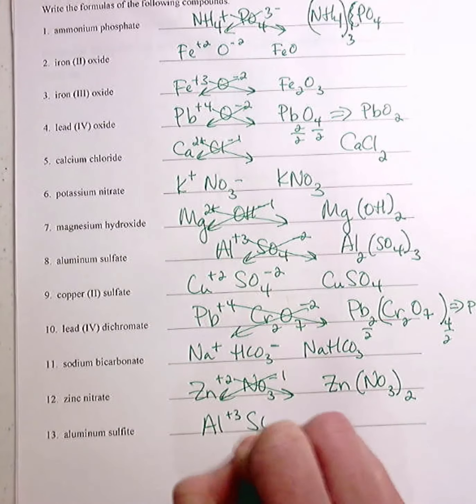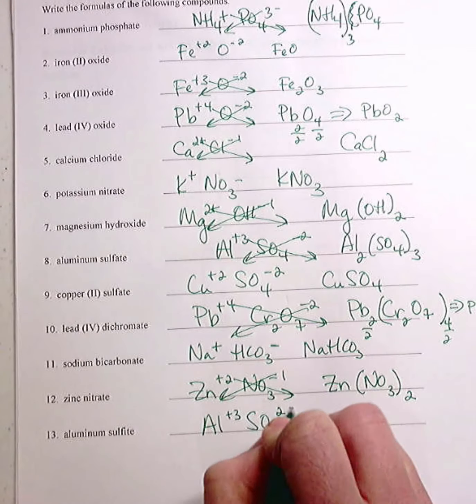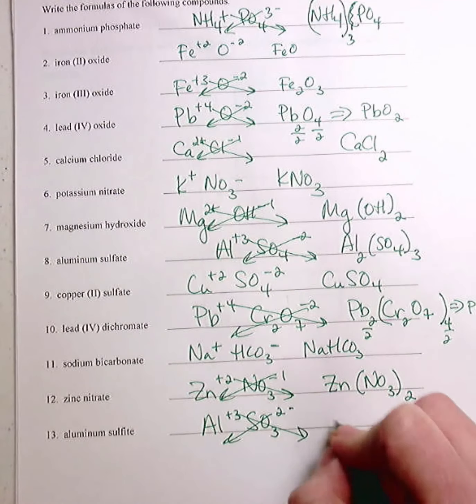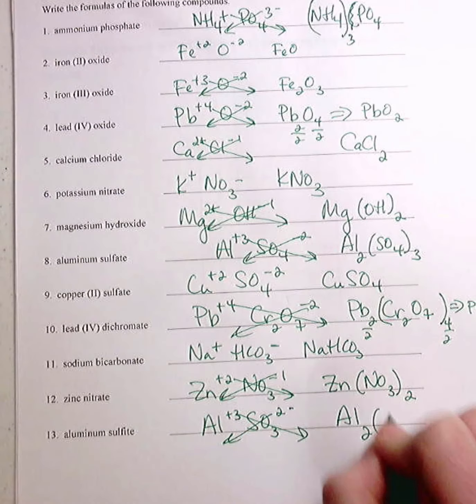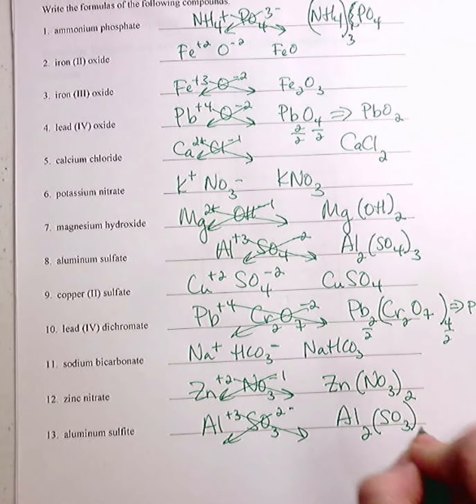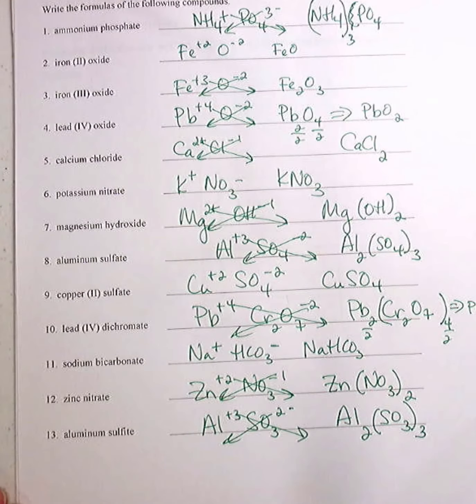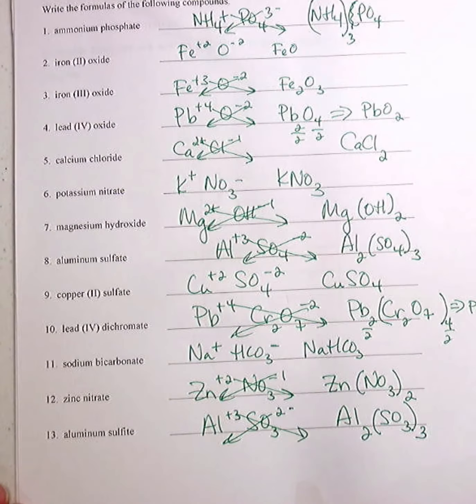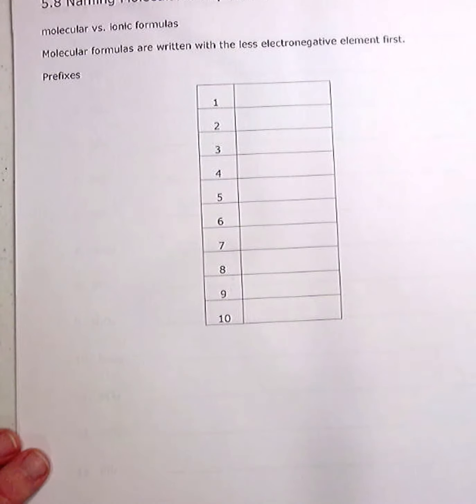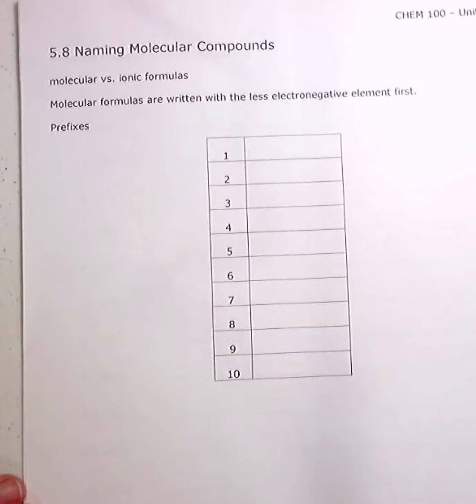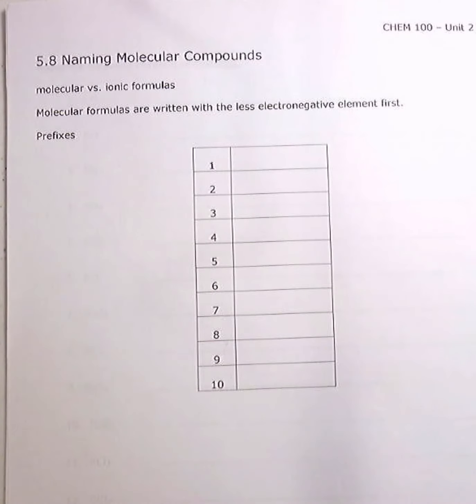Aluminum sulfite. There you go. So practice, practice, practice. Tons of practice problems with nomenclature. So now we're going to work on naming molecular compounds.